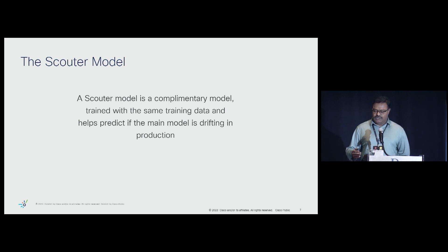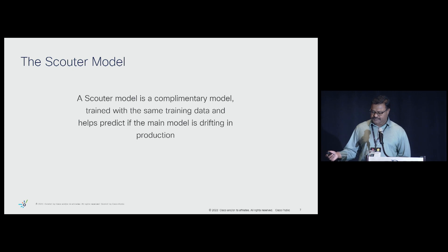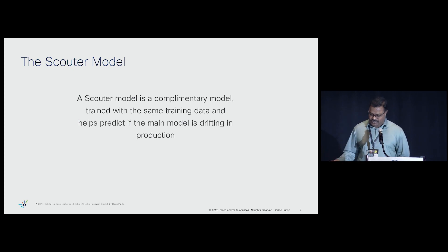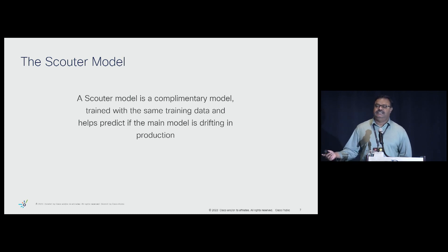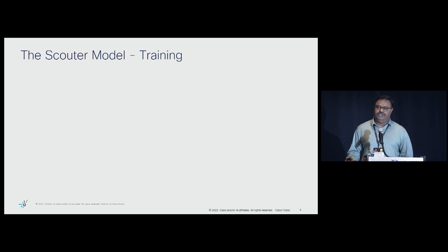What is a Scouter model? A Scouter model is a complementary model to the main model, trained on the same training data set. What it does is help predict if the main model is drifting or not. Let's go through the hypothesis of how this works first, and then discuss some experiences around it. How do you build and train a Scouter model?